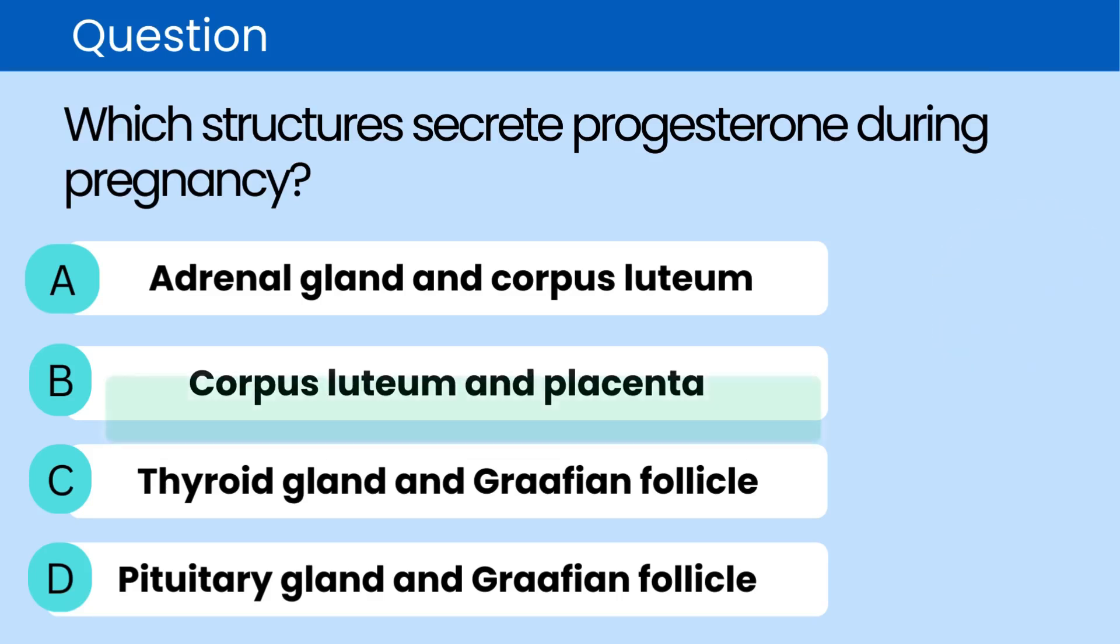The correct answer is B. Corpus luteum and placenta. During pregnancy, progesterone is primarily secreted by the corpus luteum and later by the placenta to maintain the uterine lining.